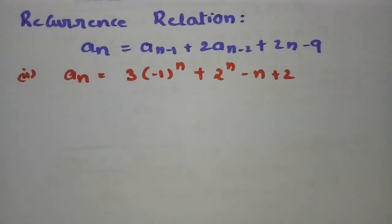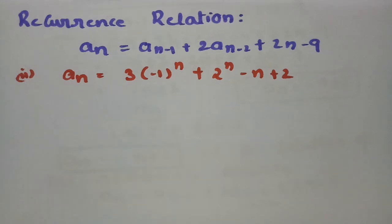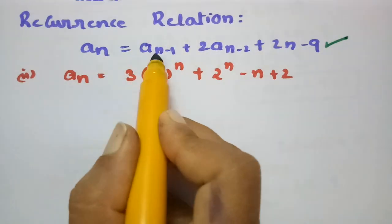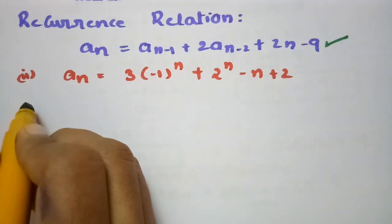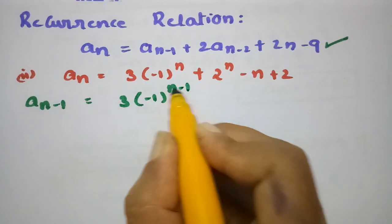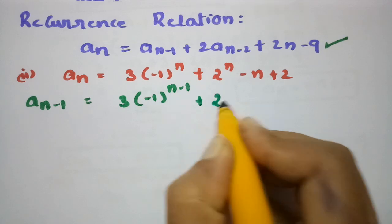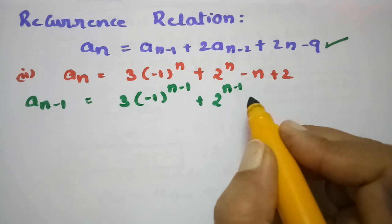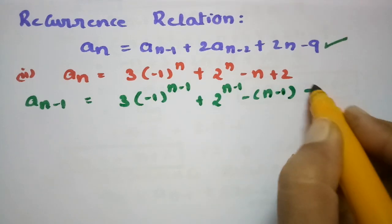The next equation: we have to determine whether a second sequence An is a solution to the same recurrence relation. We have An-1 and An-2 to solve. The An-1 value will be 3 times (-1)^(n-1) times 2^(n-1) + (n-1) + 2.